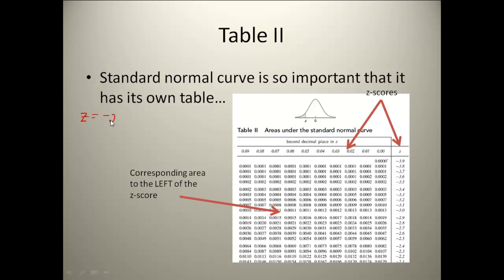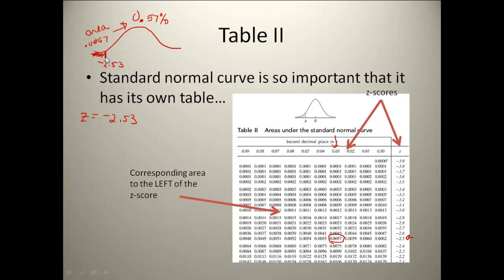Let's say I was interested in a z-score of negative 2.53. I would go down until I found negative 2.5, then track it over to the 0.03 column, and I get 0.0057. That tells me that if I have a standard normal curve and I am at the z-score of negative 2.53, the area to the left of that z-score is 0.0057. In terms of percentages, that would be 0.57% — so about half a percent of values lie below that point.